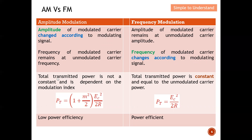Regarding power: for AM, the total transmit power is not constant — it depends on whether it is double sideband full carrier, double sideband suppressed carrier, or single sideband suppressed carrier, and it also depends on the modulation index. For FM, the transmit power is exactly equal to the power of the carrier. AM has low power efficiency, consuming more power, whereas FM has better power efficiency.